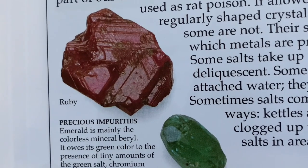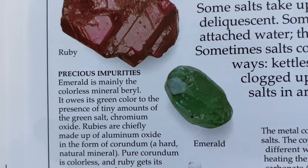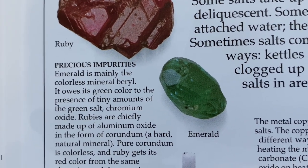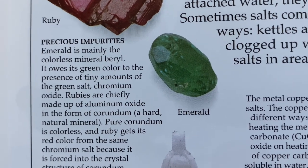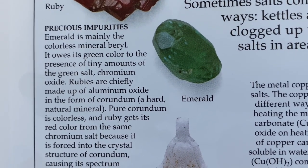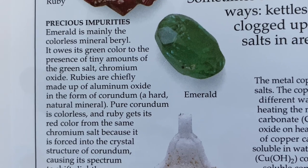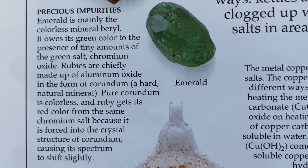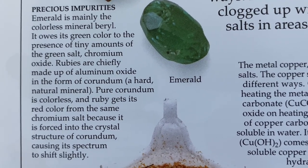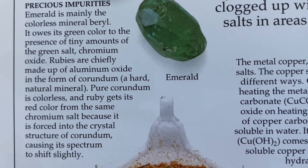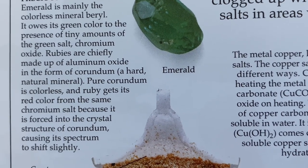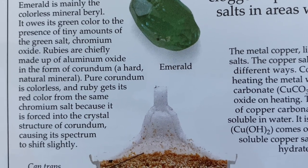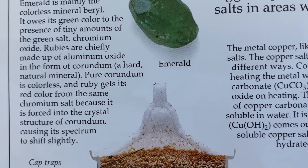Here you see a ruby and an emerald. Emerald is mainly the colorless mineral beryl — it owes its green color to the presence of tiny amounts of the green salt chromium oxide. Rubies are chiefly made up of aluminum oxide in the form of corundum, a hard natural mineral. Pure corundum is colorless, and ruby gets its red color from the same chromium salt because it is forced into the crystal structure of corundum, causing its spectrum to shift.